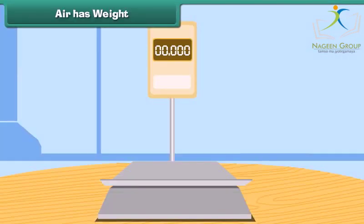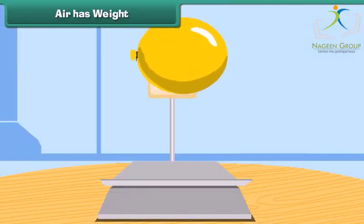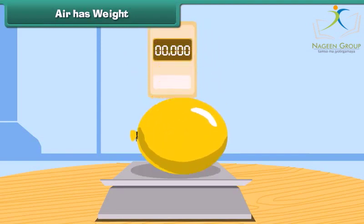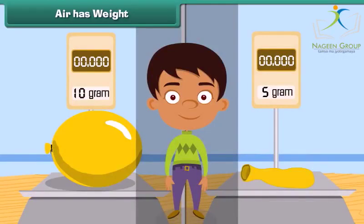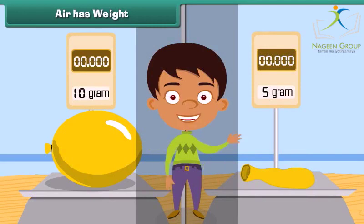Air has weight. Take an inflated balloon and weigh it. Now remove the air and deflate the balloon, then weigh it once more. The balloon had more weight when it was inflated. This proves that air has weight.